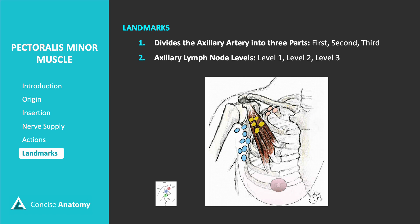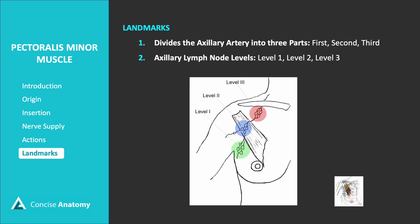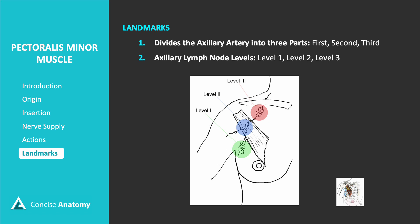The pectoralis minor also serves as a reference for classifying axillary lymph node levels, which are crucial in surgeries like axillary lymph node clearance in breast cancer and its staging. The axillary lymph nodes are divided into three levels: level 1, located lateral to the pectoralis minor, and level 2, situated beneath the muscle.